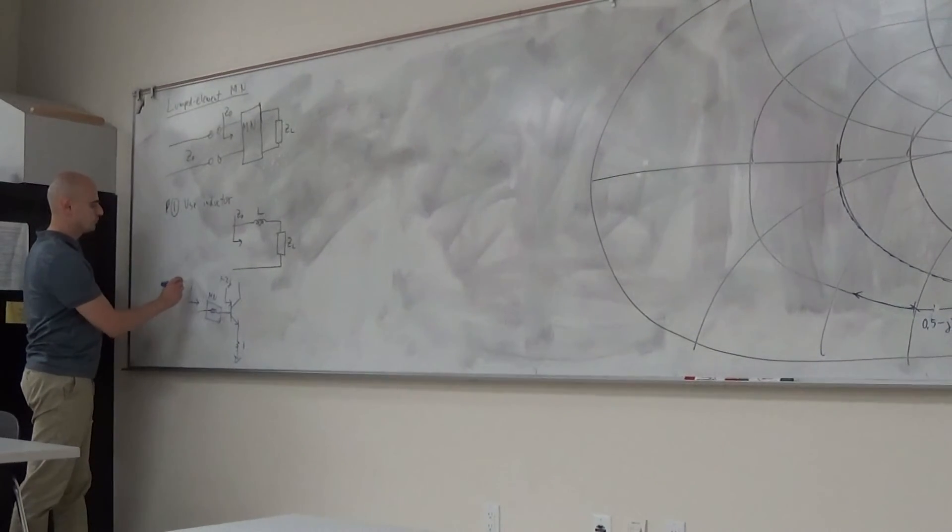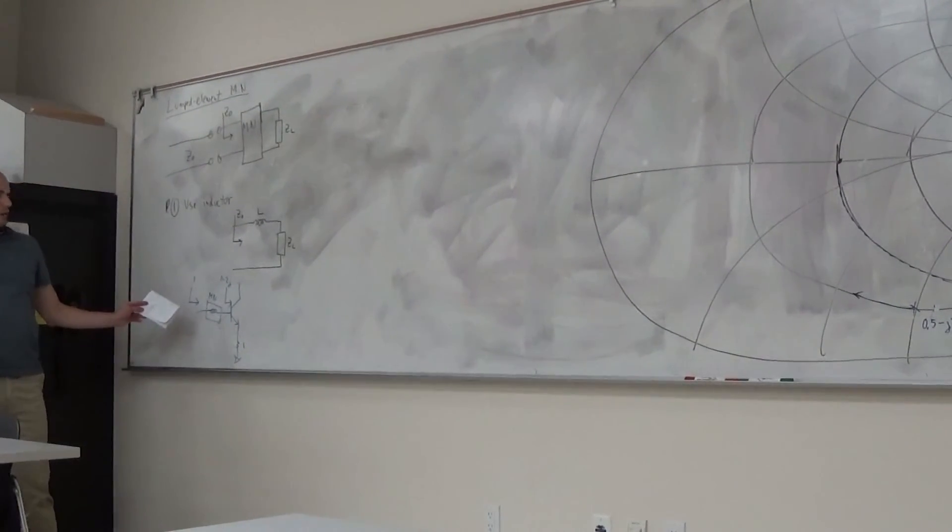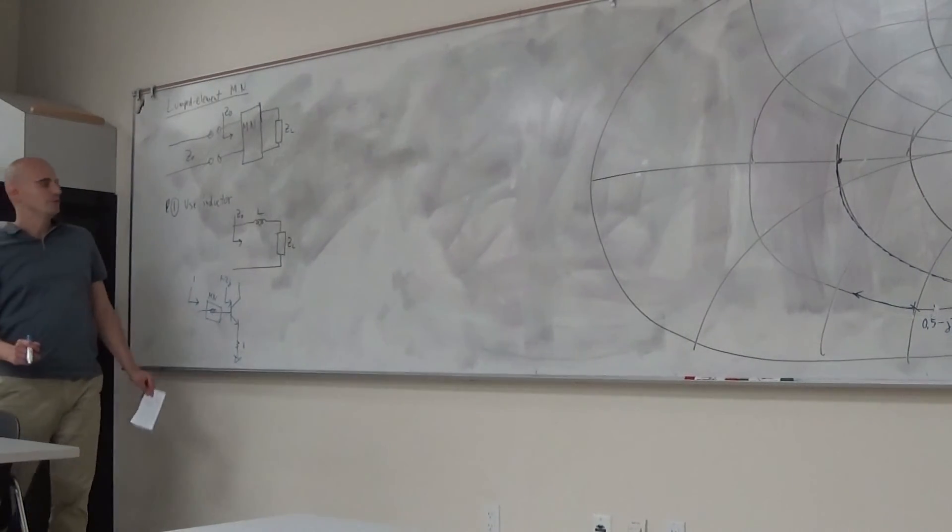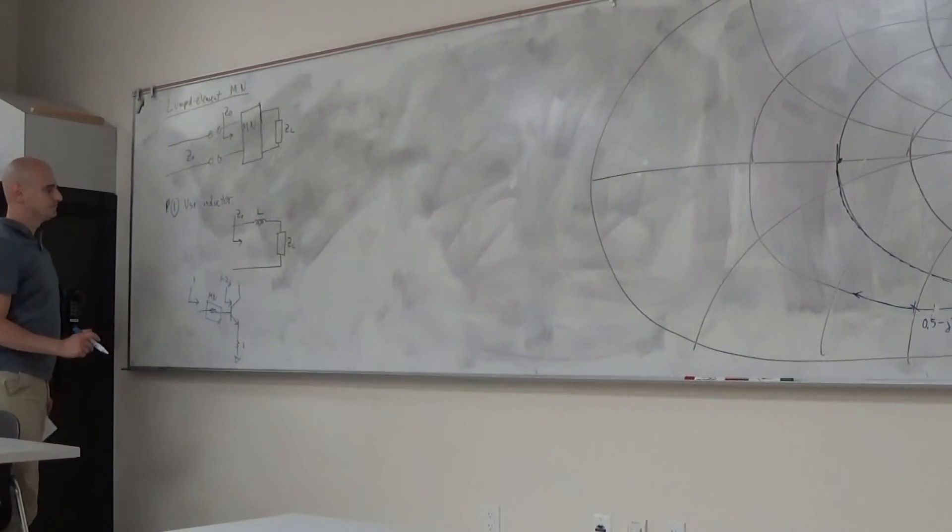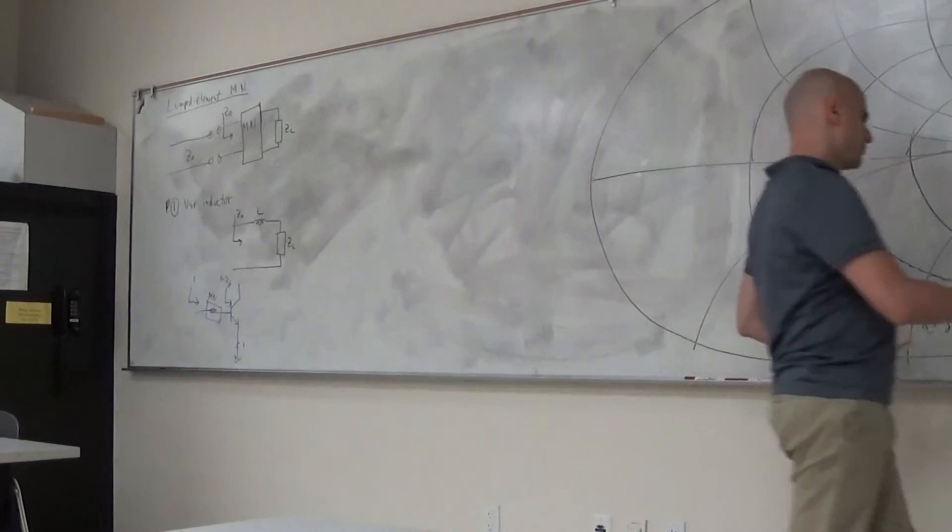So looking into here you would just see 1, which is Z naught. So we're only allowed to be on that region of this miniature. Now let's go to example. Any questions on that point?